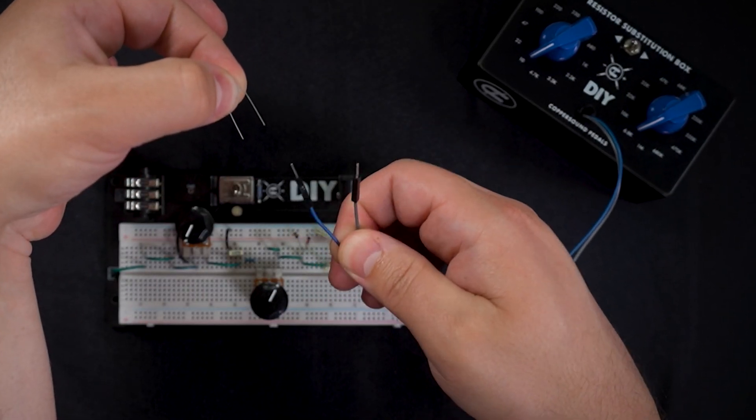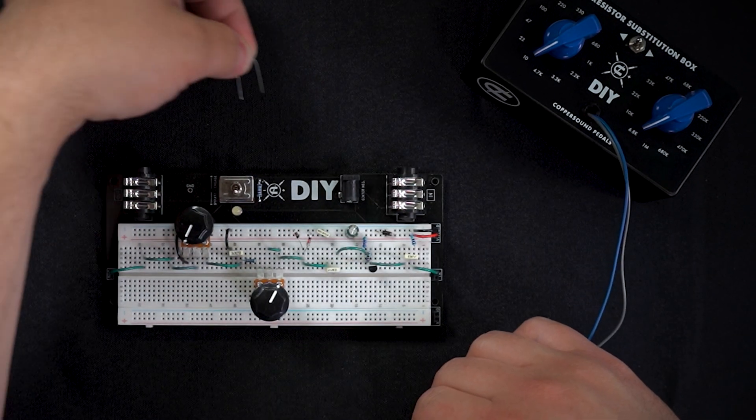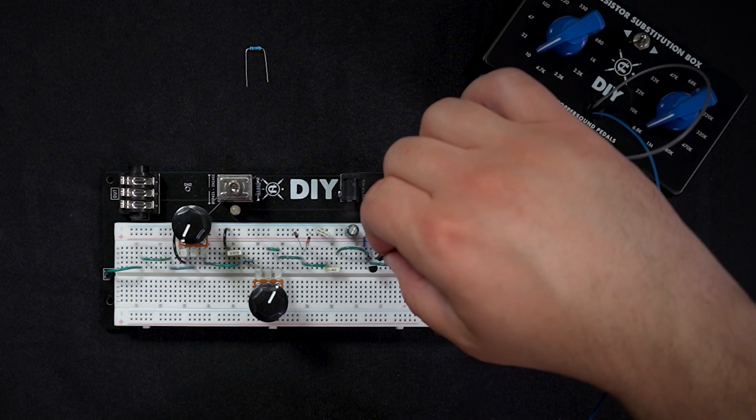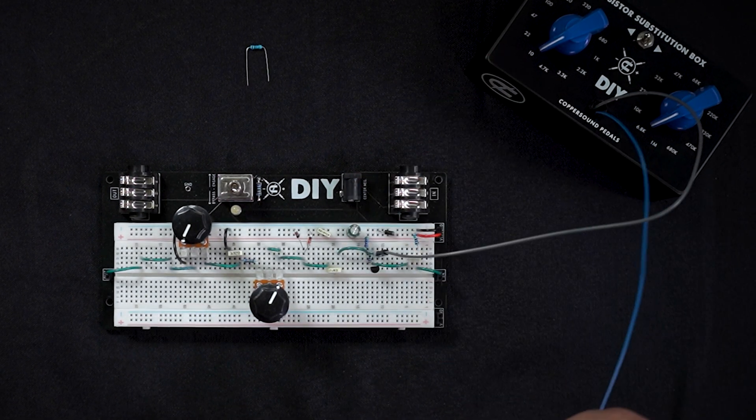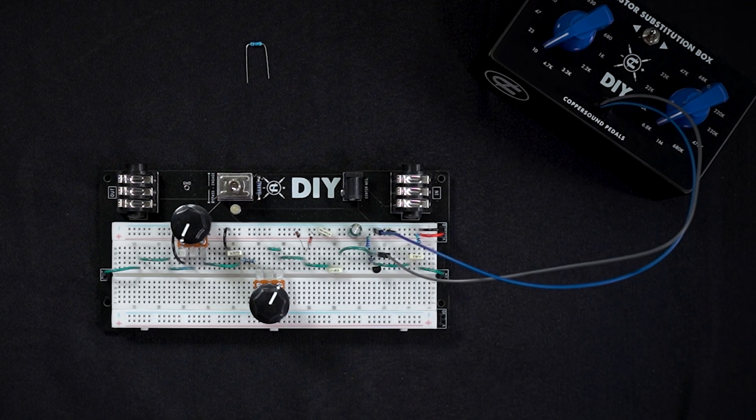Now the two leads of the sub box represent the two leads on the resistor. We're going to put that guy to the side and we're going to swap in these two leads to represent that resistor.